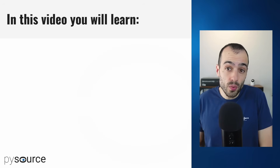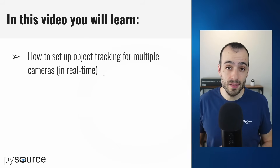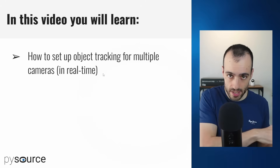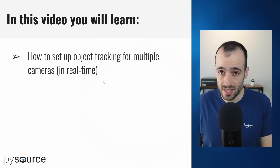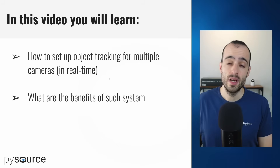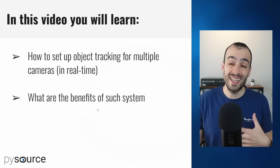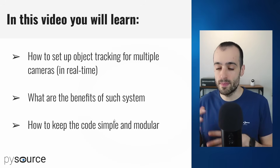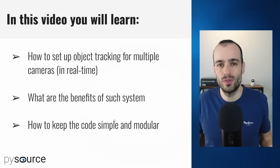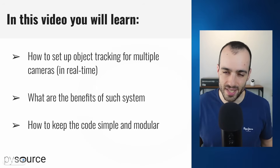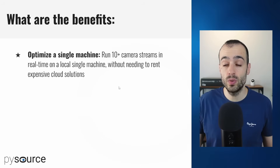Welcome to this new video. This is Sergio. You're going to learn how to set up a system to run multiple cameras for detection and tracking — so if you want to track any objects, defects, and so on on a single machine in real time. We'll see the benefits of such a system, and we'll make it very simple and modular so the implementation doesn't require too much knowledge or complex code.